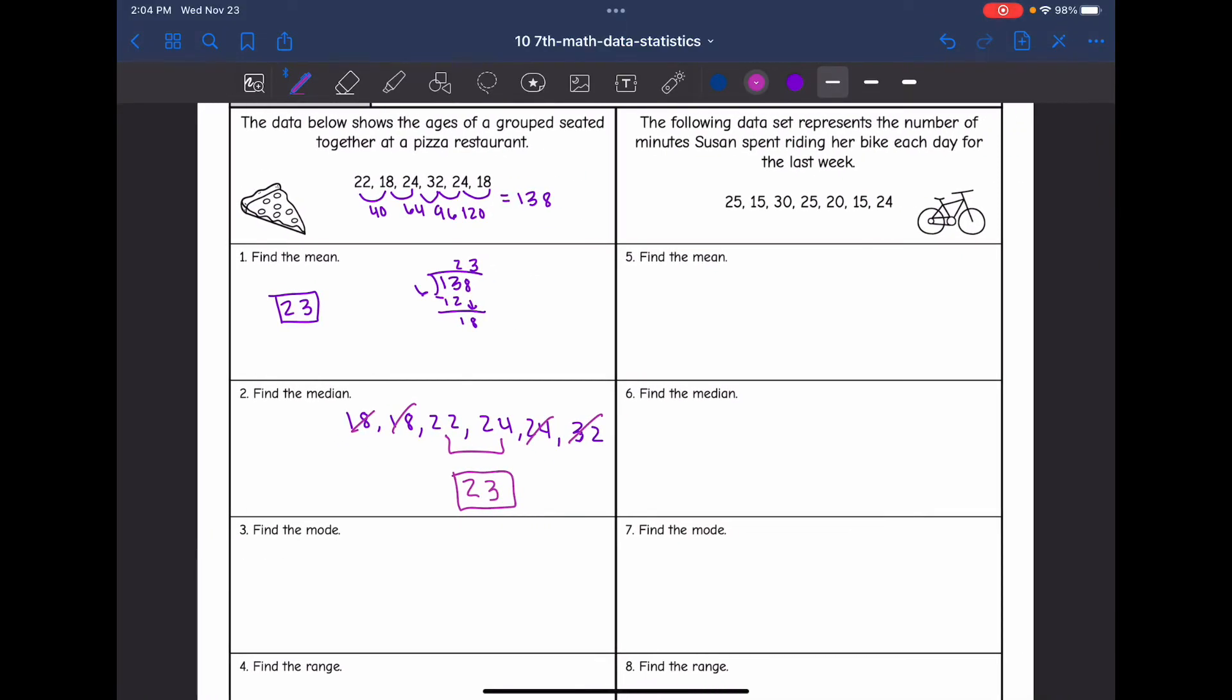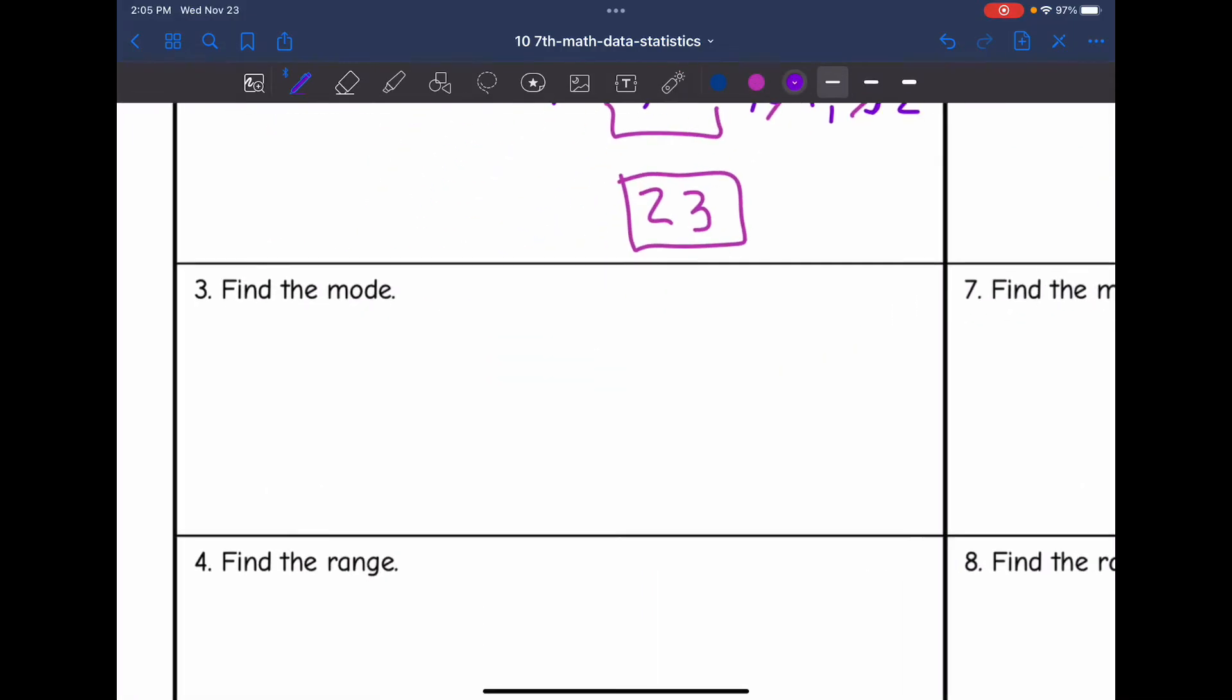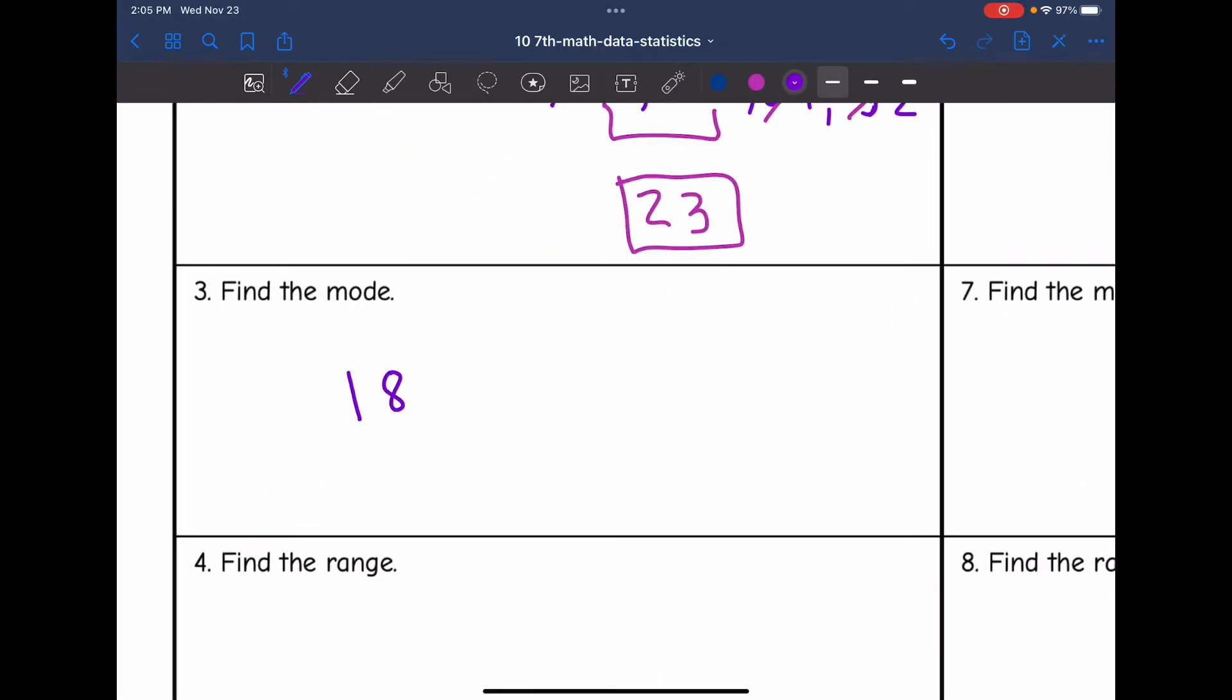Then the mode is the number that repeats the most often. There's two numbers that are repeated twice, 18 and 24. So we're going to have two modes. It would be 18 and 24.